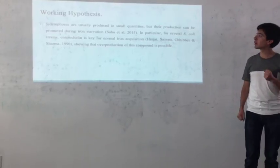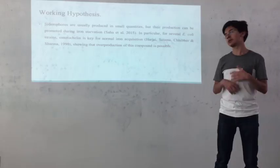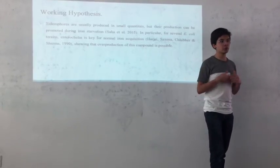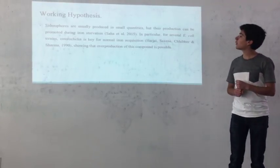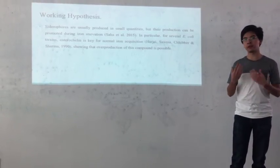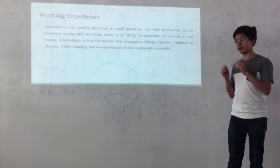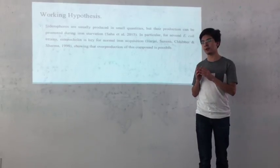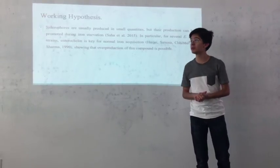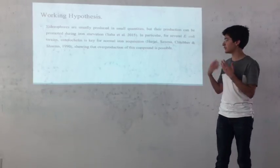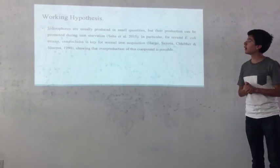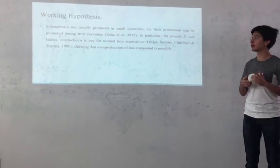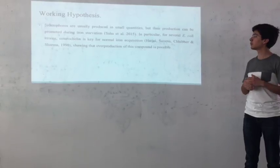Our hypothesis is that siderophores are possible to overproduce. Usually they are produced in small quantities, but they can be promoted during iron starvation. We will use the increase of substrate and the increase of enzyme concentration to achieve this strategy of overproduction. It is possible because E. coli produces enterobactin, a siderophore form, naturally, so we know this is possible.